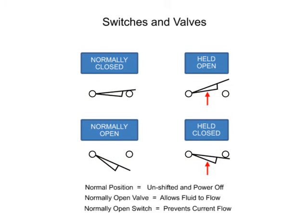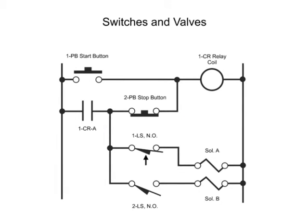Adding an arrow to either illustration indicates that the switch can be held open or closed. For example, consider the limit switch, which is an electrical switch operated by the motion of a machine or presence of an object.